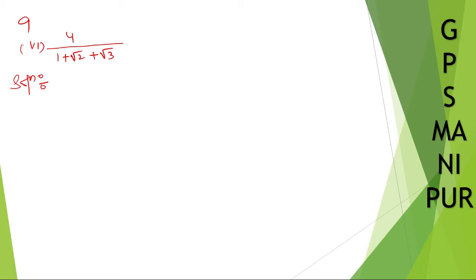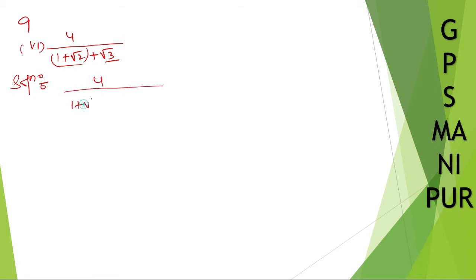How can we write this number? Same thing as with the previous question — take these two numbers and call them 'a', and the last term 'b', giving us a plus b. So write it down like this: 4 divided by 1 plus root 2 plus root 3.